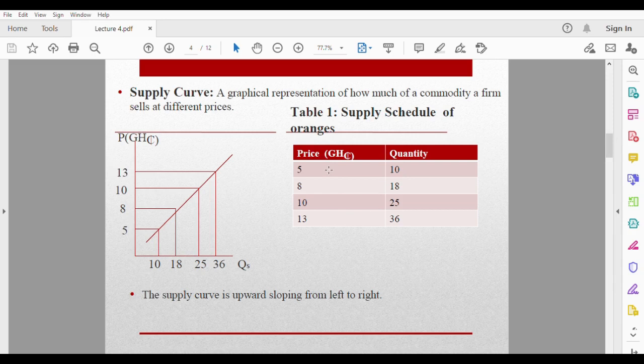At a price of 5, the quantity supplied is 10. At a price of 8, the quantity supplied is 18. At a price of 10, the quantity supplied is 25. And at a price of 13, the quantity supplied is 36. Do you observe any trend here?